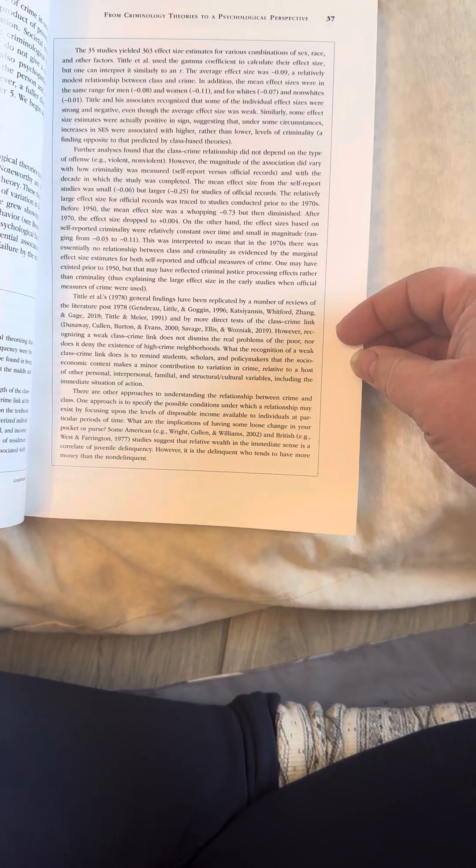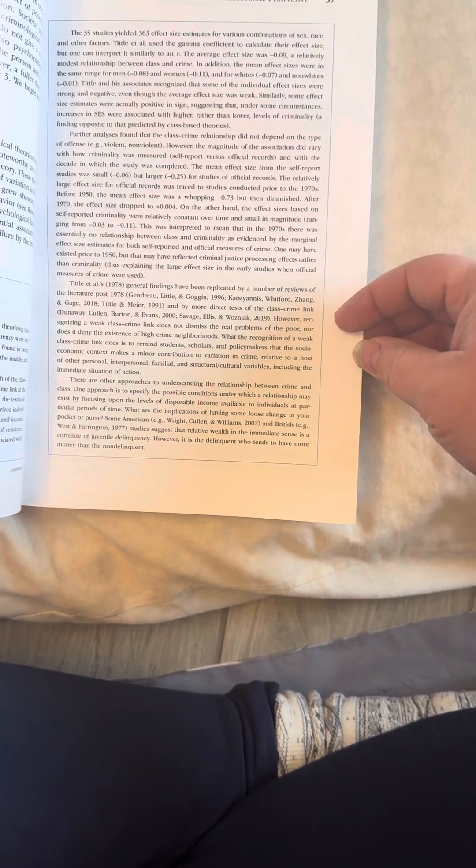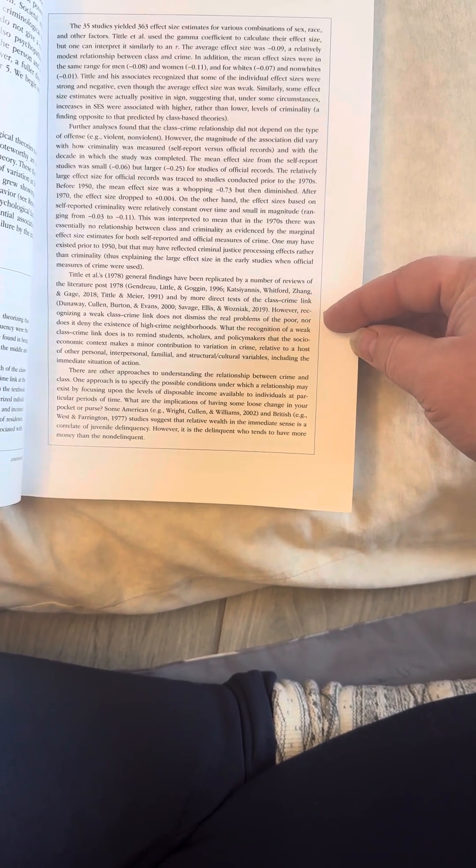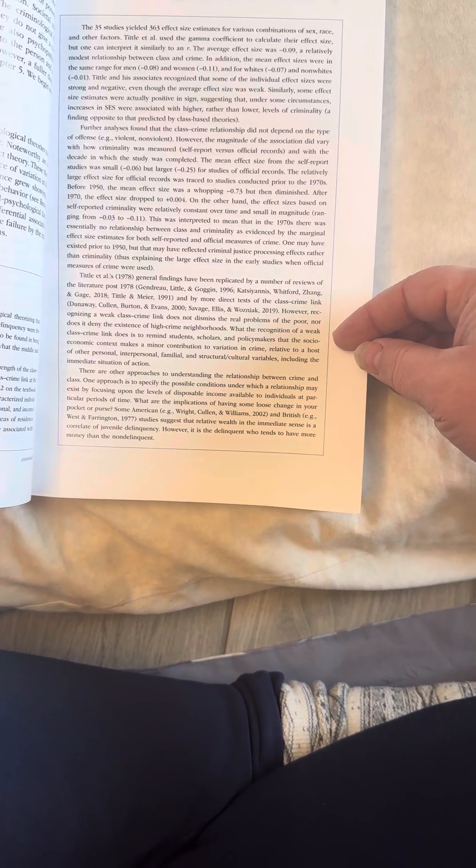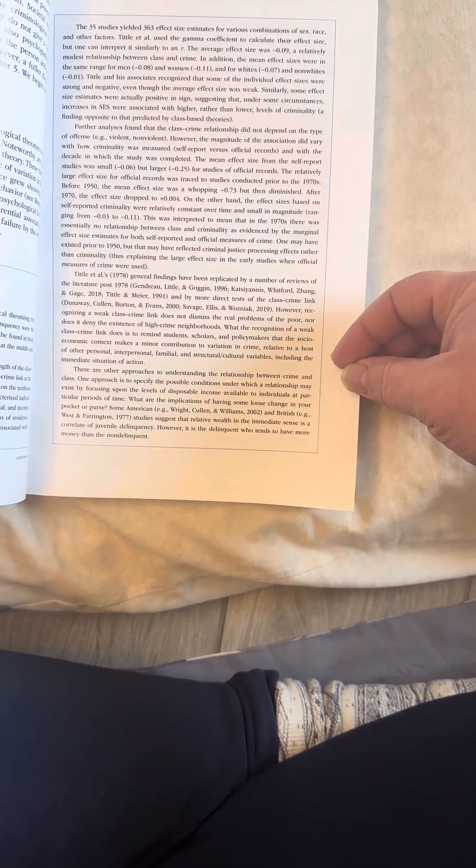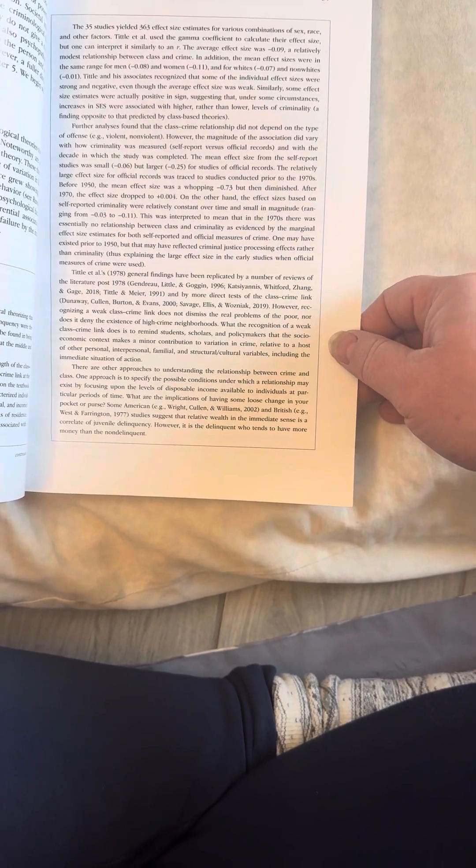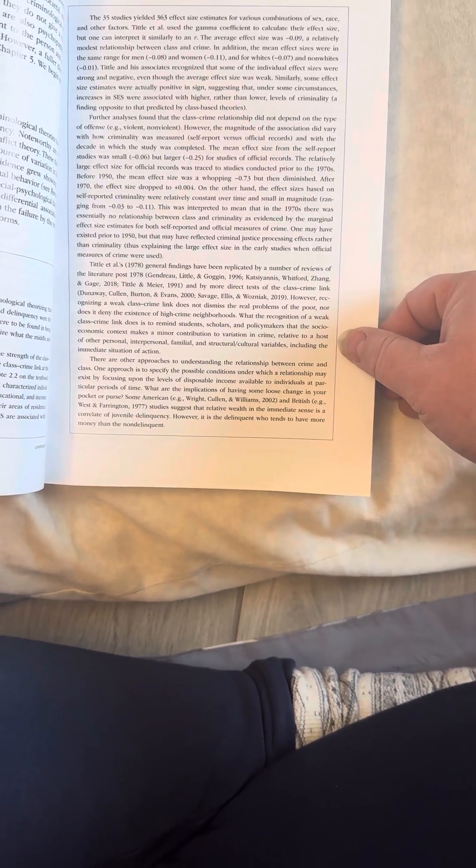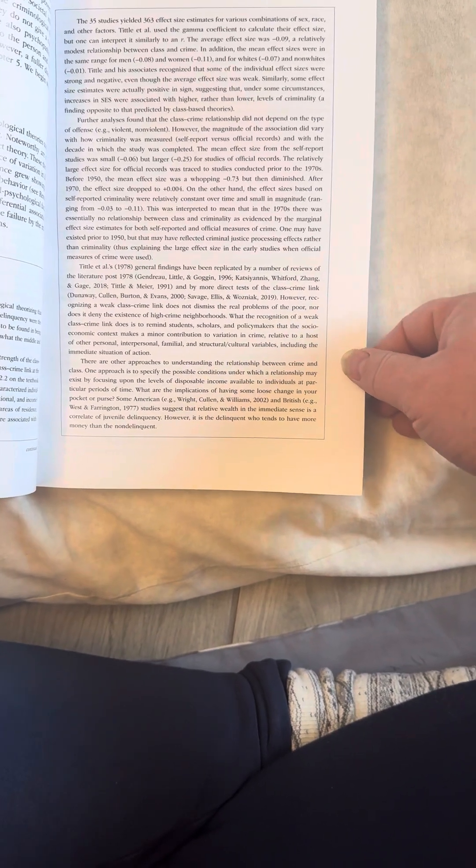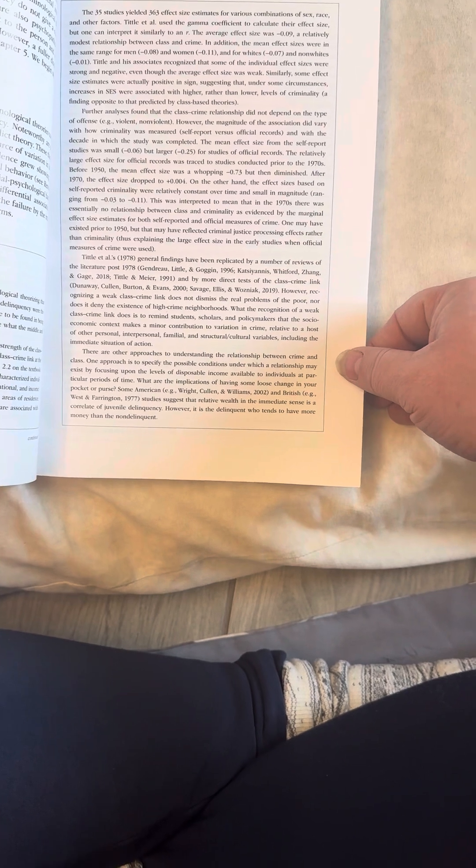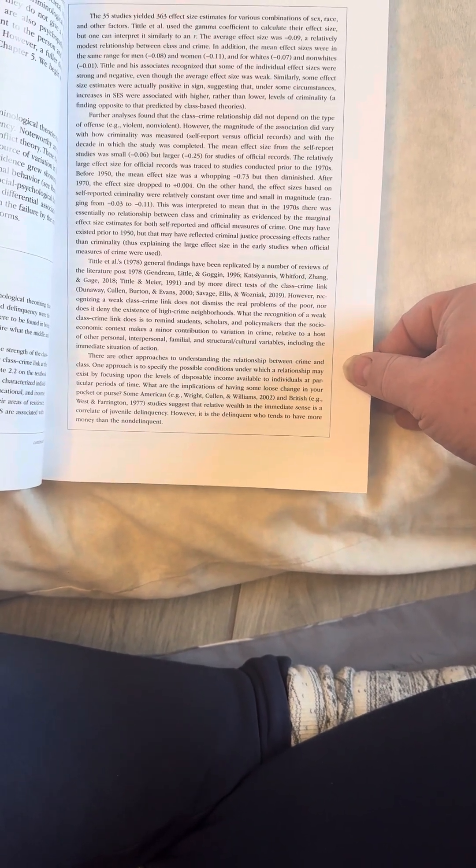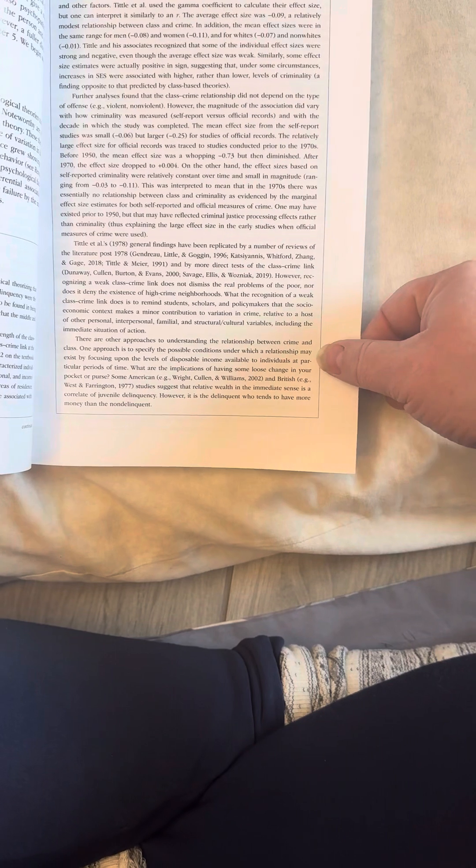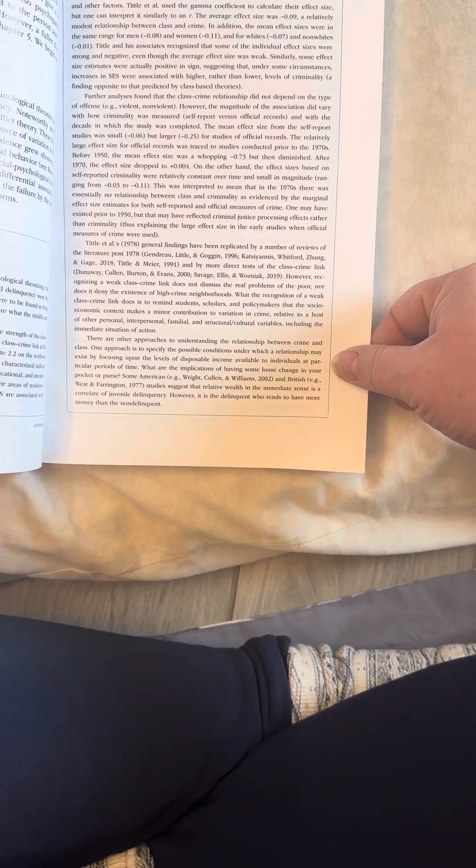Tittle's et al.'s 1978 general findings have been replicated by a number of reviews of the literature post-1978 and by more direct tests of the class-crime link. However, recognizing a weak class-crime link does not dismiss the real problems of the poor, nor does it deny the existence of high crime neighborhoods. What the recognition of a weak class-crime link does is to remind students, scholars, and policymakers that the socioeconomic context makes a minor contribution to variation in crime relative to a host of other interpersonal, familial, and structural cultural variables, including the immediate situation of action.